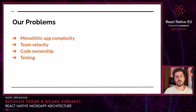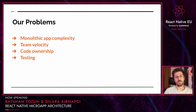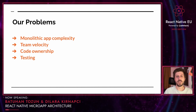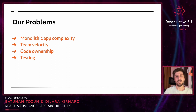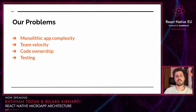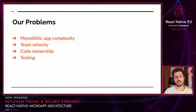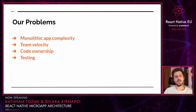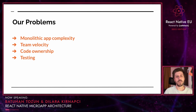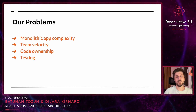Also, developer morale decreased day by day. In a single project, ownership should be well defined, but with a monolithic application structure, it was not clear. It becomes hard to test our code when 20 developers are pushing to the same repository. It makes much more sense to be able to test the smallest piece of code that was changed in an isolated way.